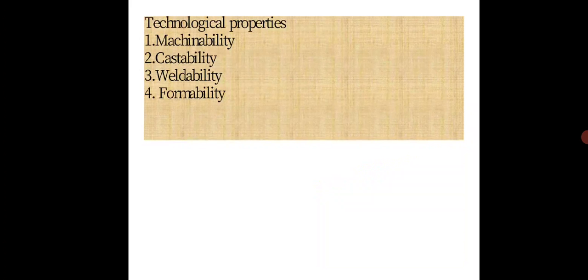Next are Technological Properties. We can divide them into four types: machinability, castability, weldability, and formability. Machinability is the property of a material which indicates that it can be cut or removed in various machining operations such as turning, drilling, boring, and shaping. The material should have the property to undergo such operations without fracturing — that is called the machinability property.